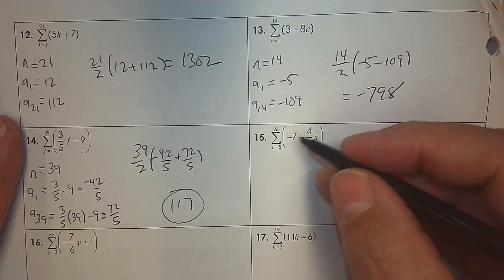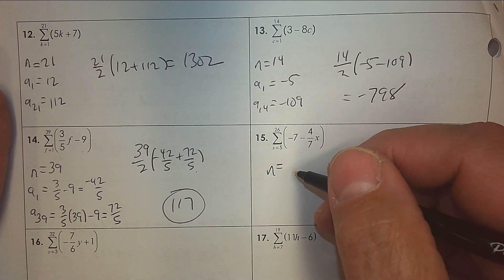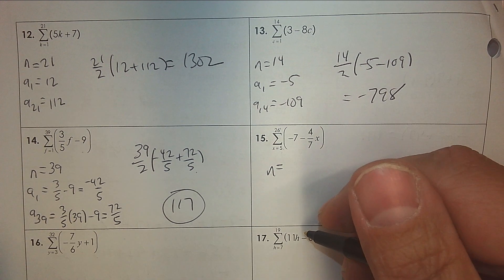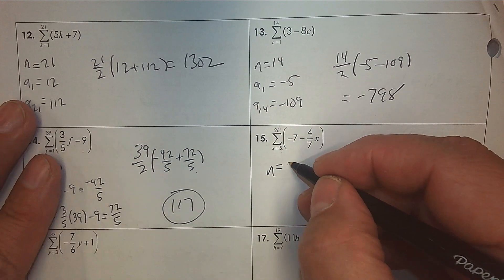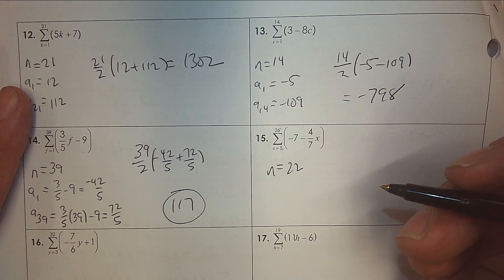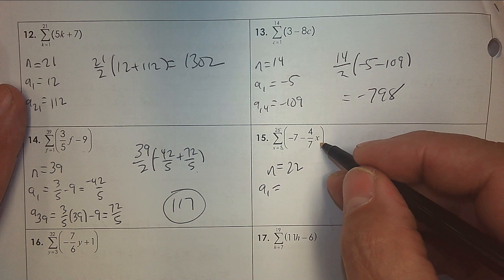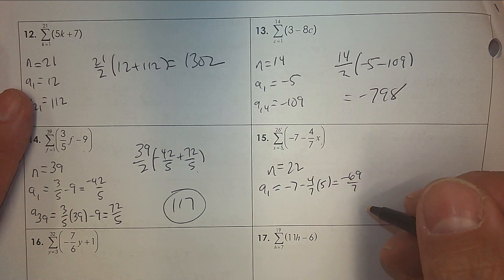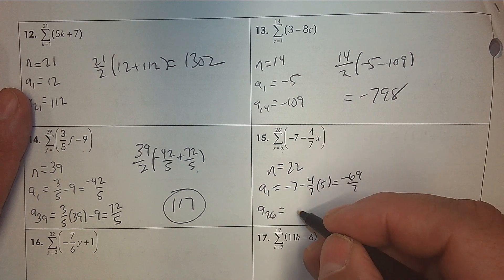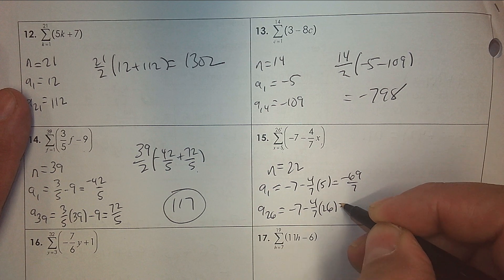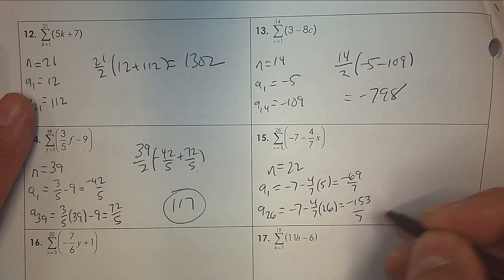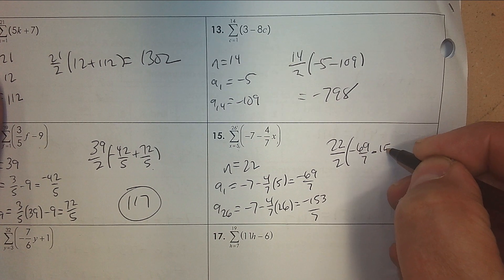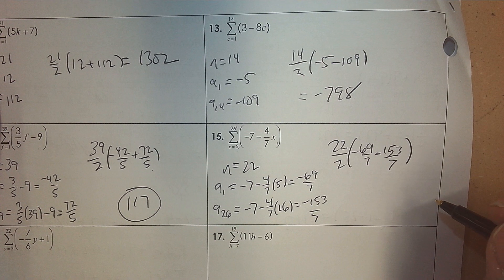Number 15 — the range is 5 to 26. To do this, we actually subtract and add 1 — that's the counting principle. To know how many numbers there are from 5 to 26: 26 take away 5 is 21, add 1 more and there are 22 terms. The first term — plug in 5 and you get negative 69 over 7. Then plug in 26 and you get negative 153 over 7. The formula: how many terms divided by 2, times (first term plus last term).